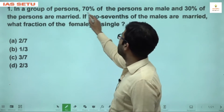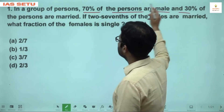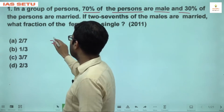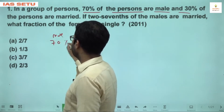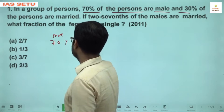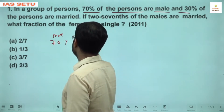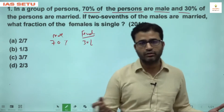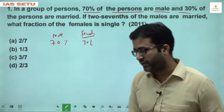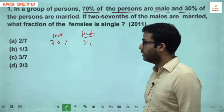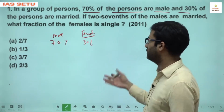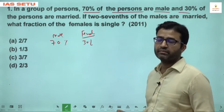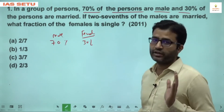Question 1: In a group of persons, 70% of the persons are male and 30% are married. If 70% are male, the first thing to note is 30% are female. In UPSC and competitive exams, they consider only two genders — male and female. So if they say 70% male, it means 30% female.